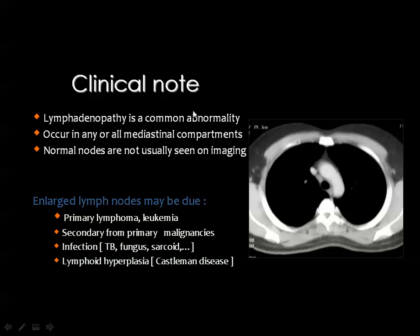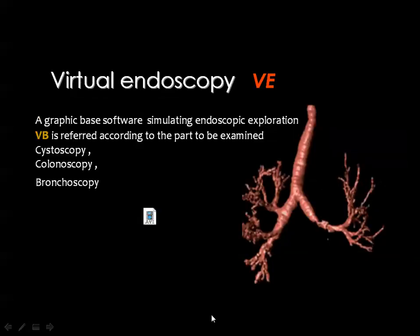Lymphadenopathy is a common abnormality occurring in all mediastinal compartments, and we will cover this in the mediastinal imaging lecture. Lymph nodes are not normally seen on imaging. Enlarged lymph nodes may be due to lymphoma, leukemia, metastasis from primary malignancies, infection such as TB and sarcoidosis, or lymphoid hyperplasia.